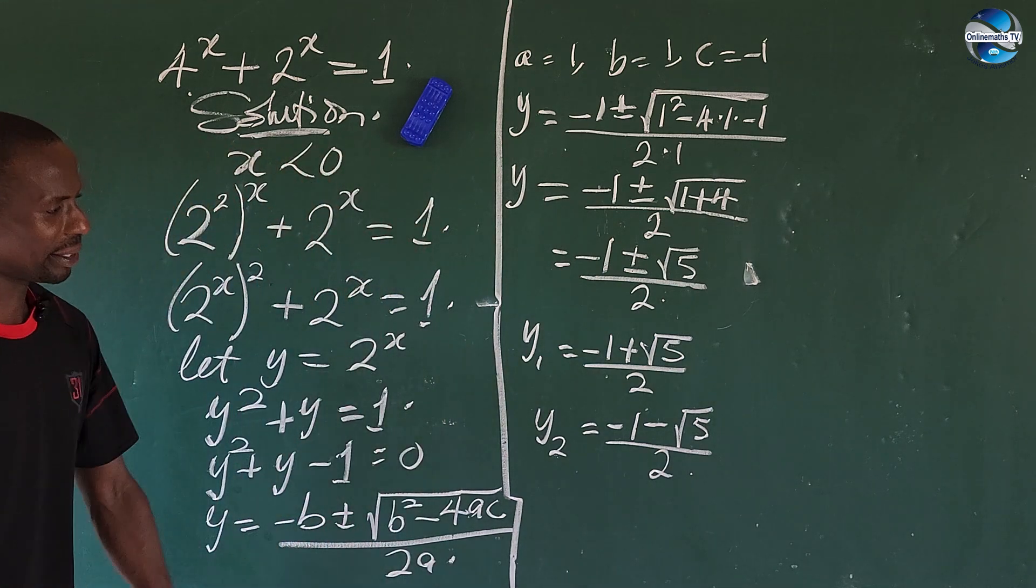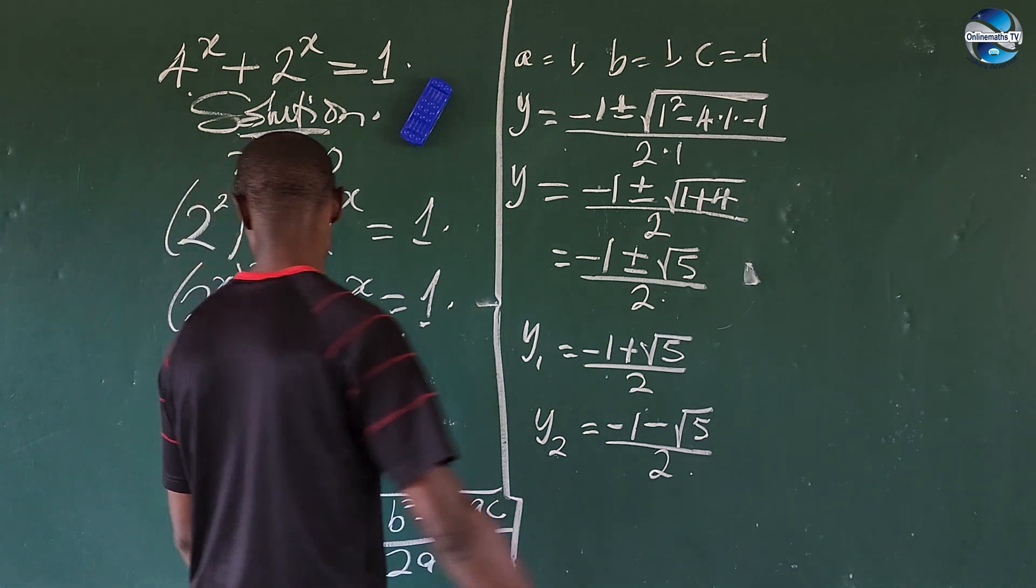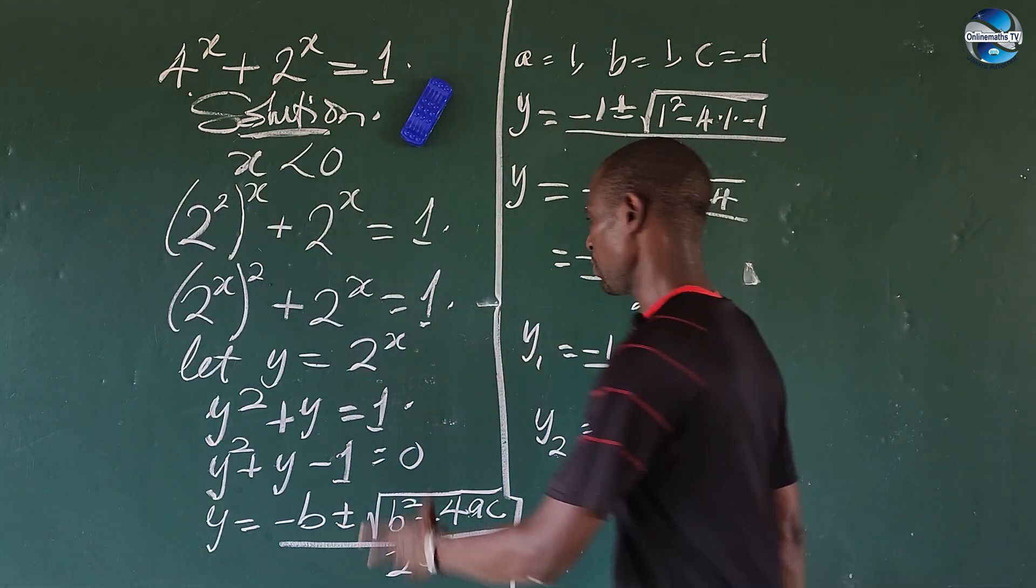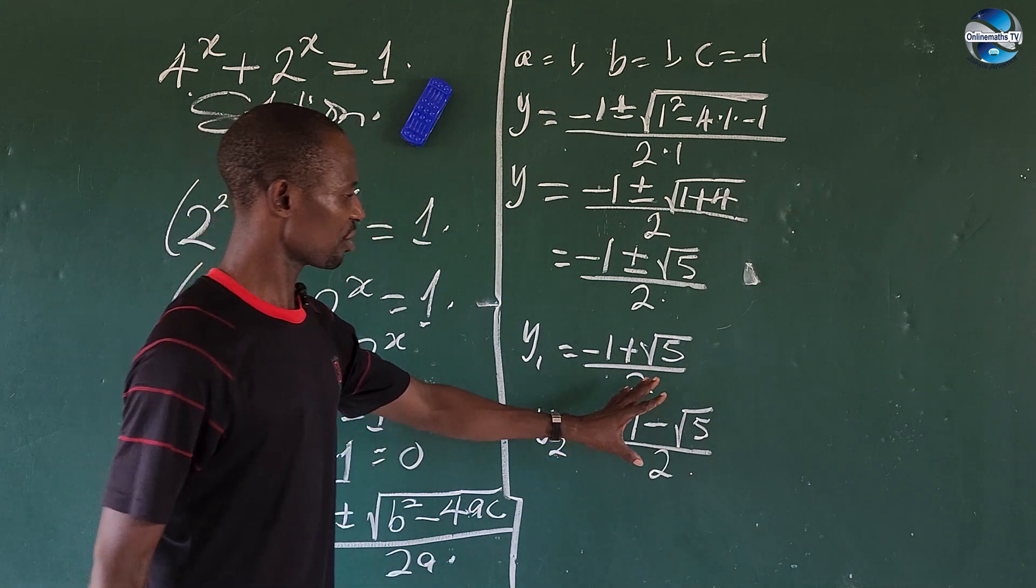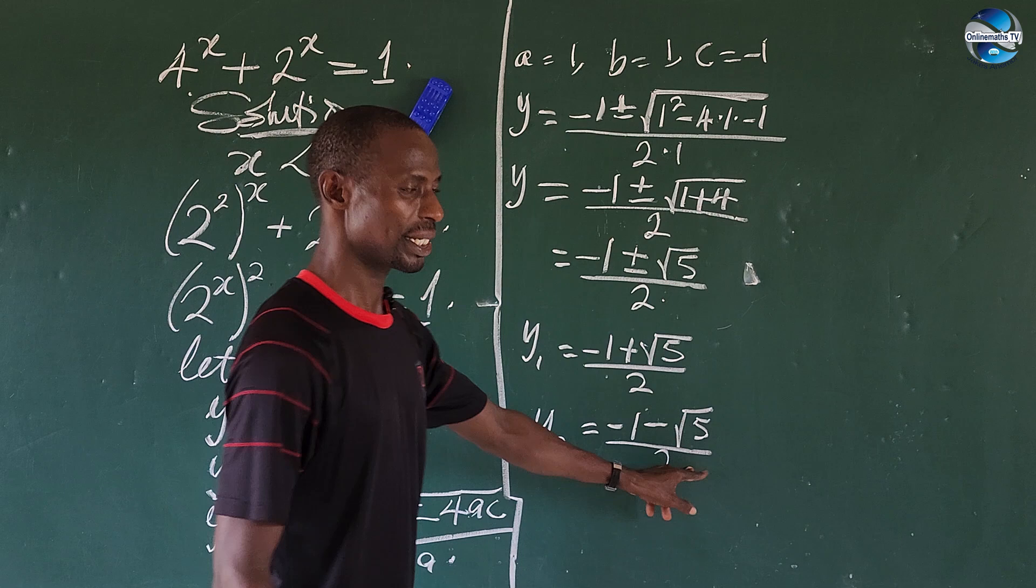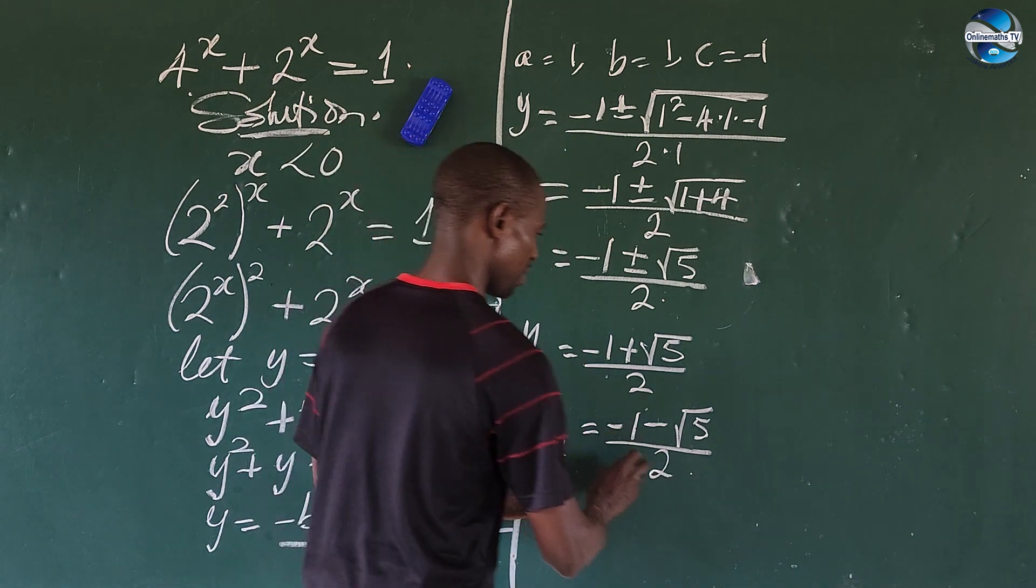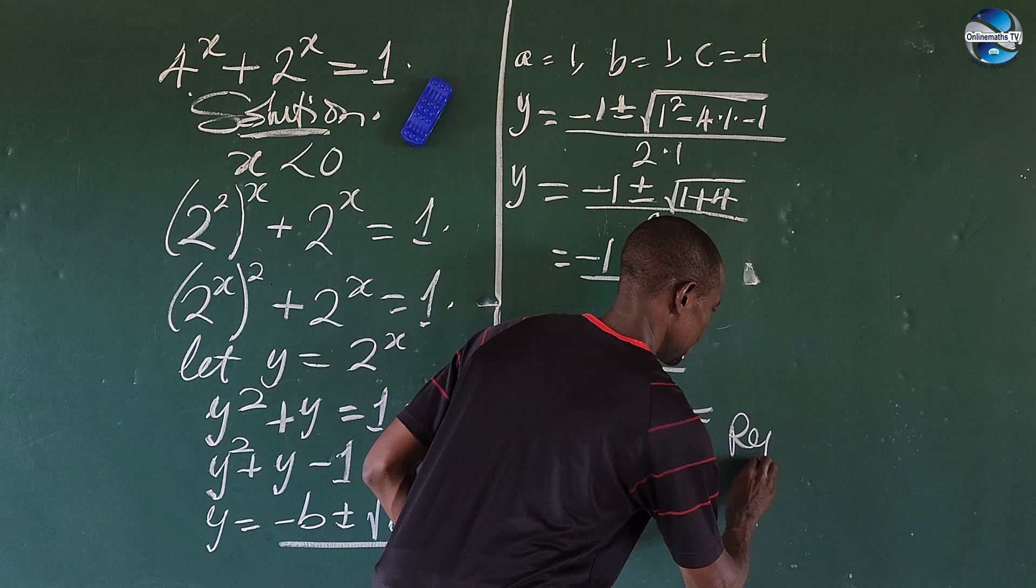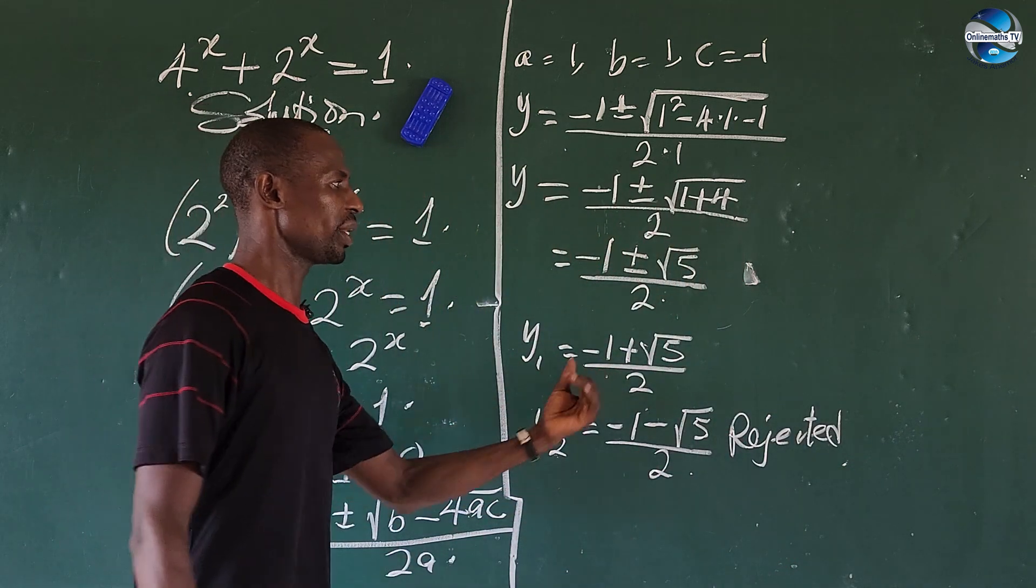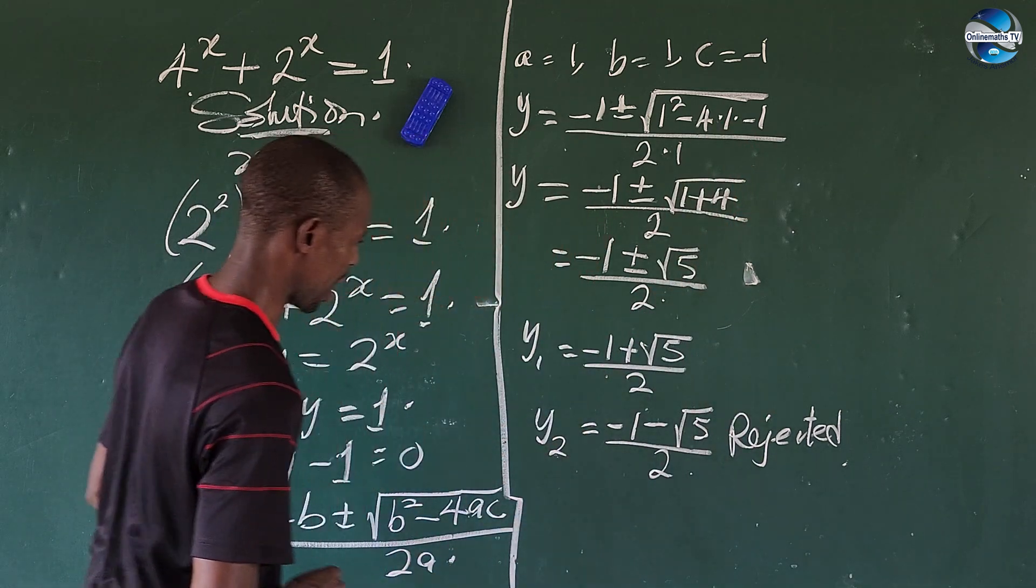Now let's take a critical look at these expressions we have here. Remember we said let y be equal to 2 to the power of x. And if we bring this expression in here this will give us negative, and so this answer is rejected. So if we reject this we pick up only this guy here.